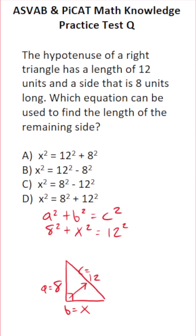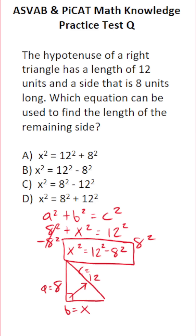We want to solve this equation for the missing side, which is x. So I'm going to subtract 8 squared from both sides of the equation. This crosses out, leaving me with x squared equals 12 squared minus 8 squared. We can see that this is answer choice B, and just like that, we are done.